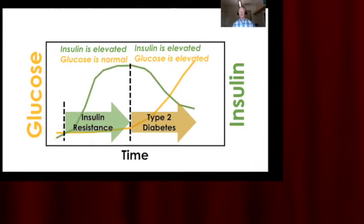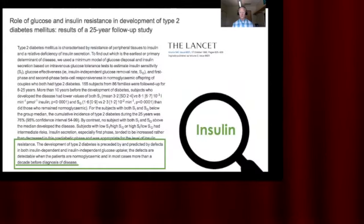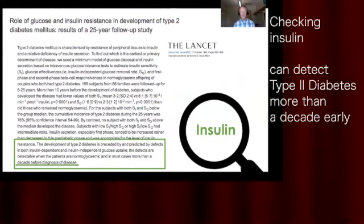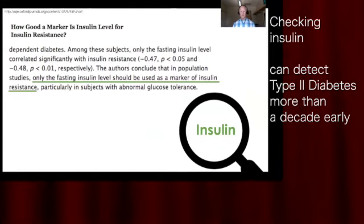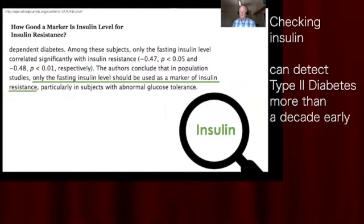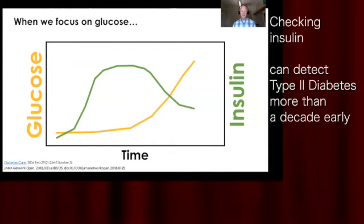This is played out in the literature: in people with type 2 diabetes, if you're looking at insulin and not glucose, we can detect changes a decade — and likely more than a decade — earlier than glucose changes. This study makes the case that it is insulin, not glucose, that should be used as the marker of the disease.